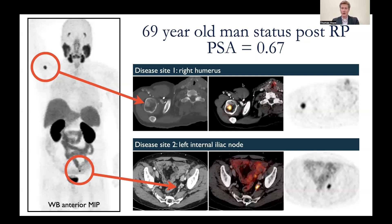This is very different from where we would have thought his disease was without a PSMA PET. He would have undergone salvage radiotherapy to his prostate bed and maybe pelvic lymph nodes, and we wouldn't have treated his actual disease. But now that we know where his disease is, we can treat it with oligometastatic treatment — SBRT radiation therapy to the humerus, lymph nodes, and maybe the prostate bed — hopefully changing the course of his disease.